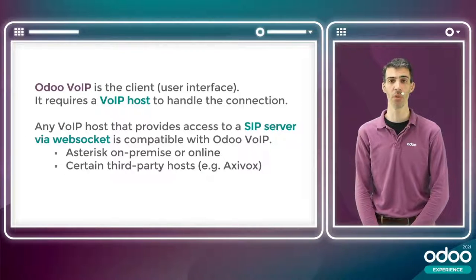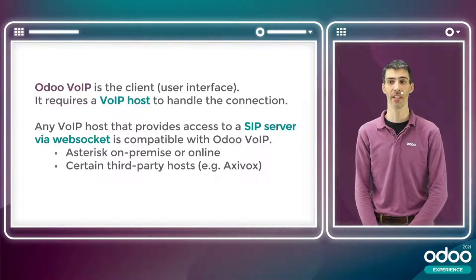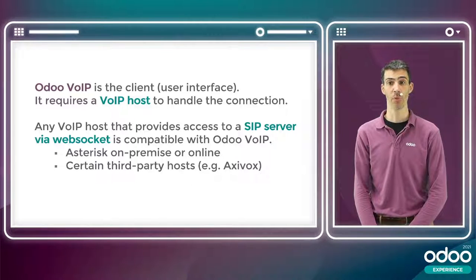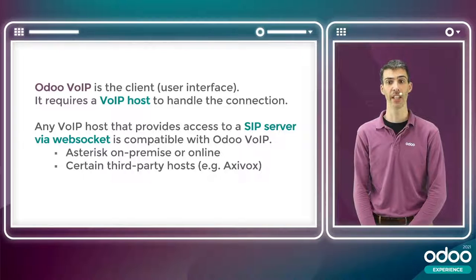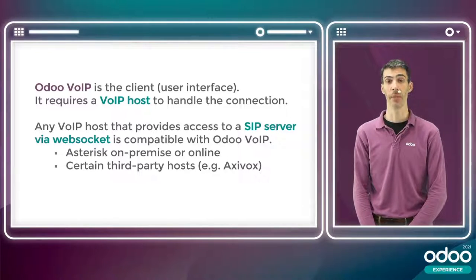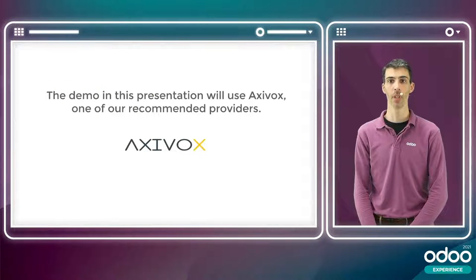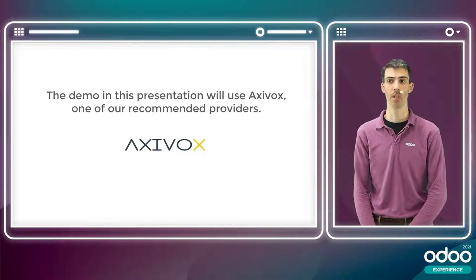You can see Odoo VoIP as the client or user interface. It requires a VoIP host to handle the connection. Any VoIP host that provides access to a SIP server via WebSocket is compatible — for example, an Asterisk instance installed on-premise or online. Certain third-party hosts like Axivox are also compatible. The demo in this presentation will use Axivox, one of our recommended partners.